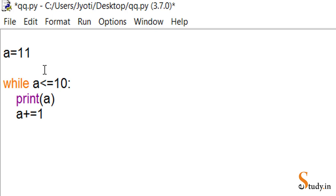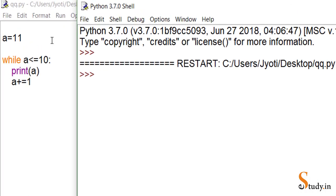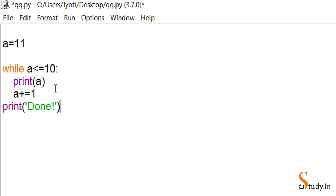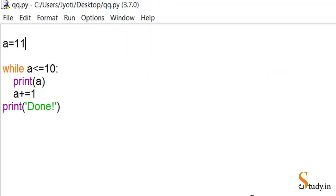Suppose the initial value of 'a' was 11. In that case, the condition is false from the start, so the loop is never entered and there will be no output. Let's run it and see — there's no output. To confirm, we add a print('done') statement outside the loop. With a = 11, when we run it, we see only 'done' printed, because the loop body is skipped.